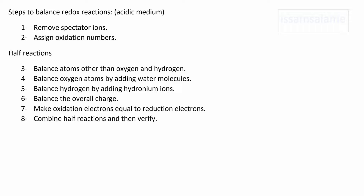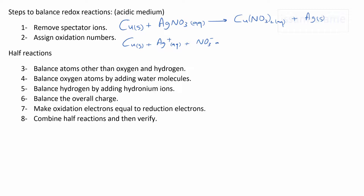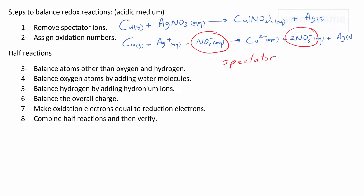The first step in balancing redox reactions in an acidic medium is by removing the spectator ions. For you to understand how to remove the spectator ions, look at the following example. Imagine we have a reaction between copper and silver nitrate to produce copper nitrate and silver. If I want to write the net ionic equation, I have to split the aqueous solutions. Silver nitrate should be split into silver and nitrate. On the other side, copper nitrate should be split into copper and nitrate. As you can see, the nitrate ion is common in the reactants and the products, so we call it a spectator ion and it can be cancelled when we write the net ionic equation.